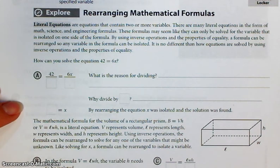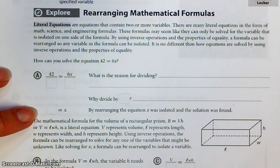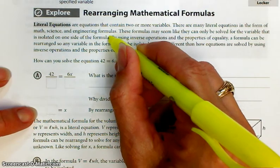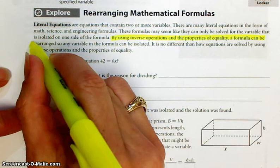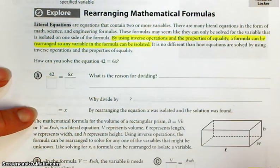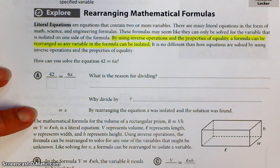Literal equations are equations that contain two or more variables. There are many literal equations in the form of math, science, and engineering formulas. These formulas may seem like they can only be solved for the variable that is isolated on one side of the formula. But by using inverse operations and the properties of equality, a formula can be rearranged so any variable in the formula can be isolated. It's no different than how equations are solved by using inverse operations and the properties of equality.